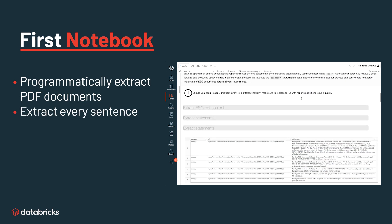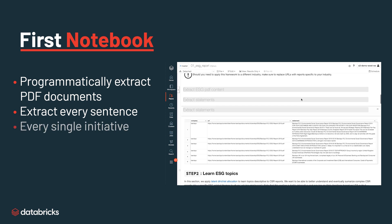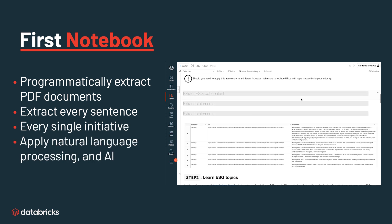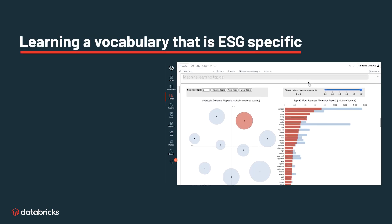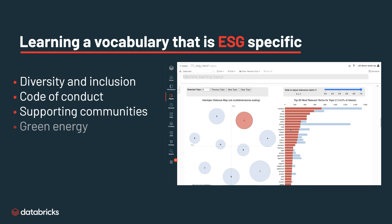This first notebook shows practitioners how to programmatically extract PDF documents, extract each and every single sentence, every single initiative, and apply natural language processing and AI to understand what those statements are all about — learning a vocabulary that is ESG-specific with themes such as diversity and inclusion, code of conduct, supporting communities, and green energy.